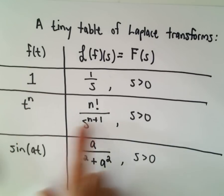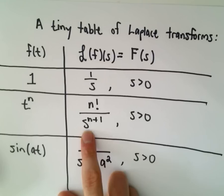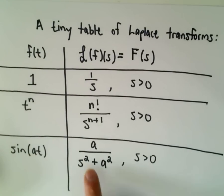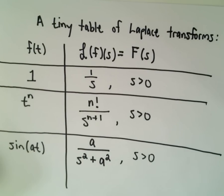If you have t to a power n, you end up getting n factorial over s to the n plus 1. If it's sine of a t, we get a over s squared plus a squared.